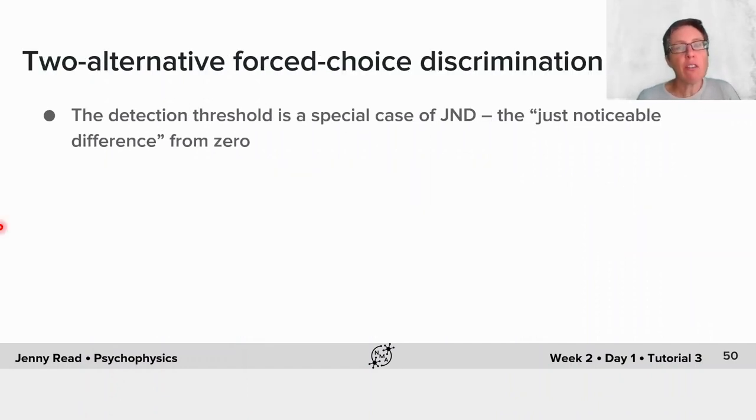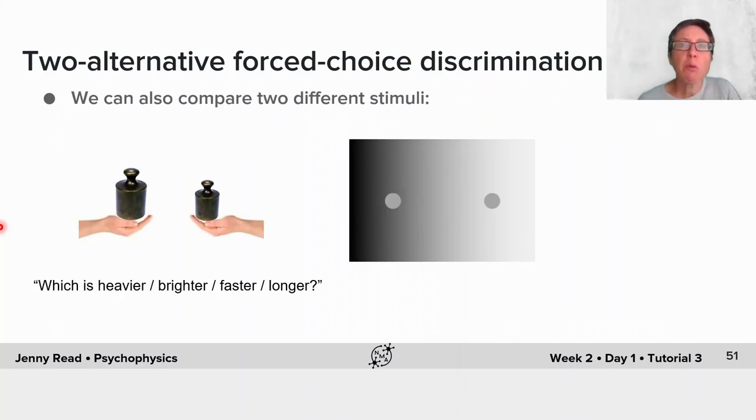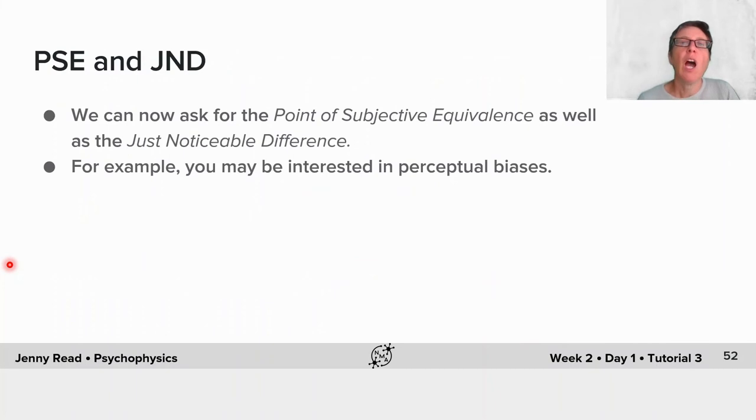The detection threshold is really just a special case of a JND. It's the just noticeable difference from zero. But we can also do a discrimination task in which we're comparing two different stimuli. We could ask, for example, which weight is heavier, which light is brighter, which dots are moving faster, which line is longer, and so on.